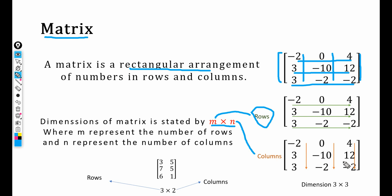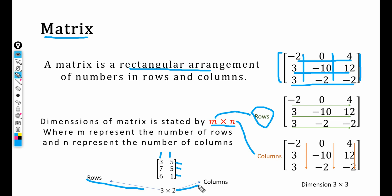Now, what if we have three rows and two columns? There are two columns and three rows, so we can say this matrix is a 3 × 2 matrix, where m is 3 representing the number of rows and n is 2 representing the number of columns.